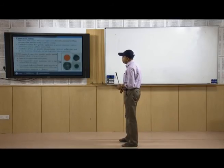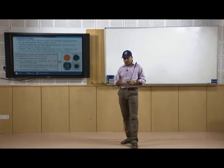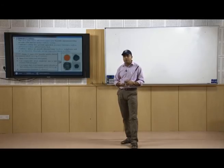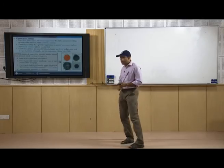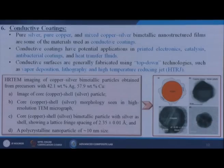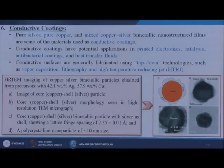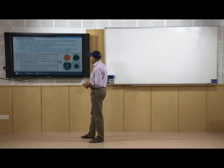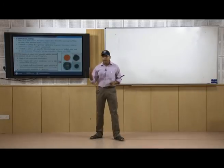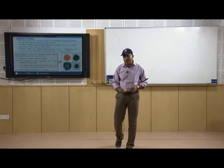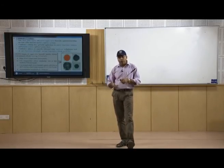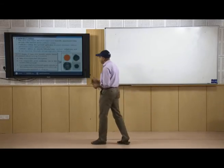Next, conductive coatings. By changing only the outer surface of a material, we can make it conductive. Pure silver, pure copper, and mixed copper-silver bimetallic nanostructure films are materials used as conductive coatings. Conductive coatings have potential applications in printed electronics, catalysis, antibacterial coating, and heat transfer fluids. Conductive surfaces are fabricated using top-down technologies such as vapor deposition, lithography, and high-temperature reduction. Highly conductive fillers are applied as coatings without changing the bulk material properties.